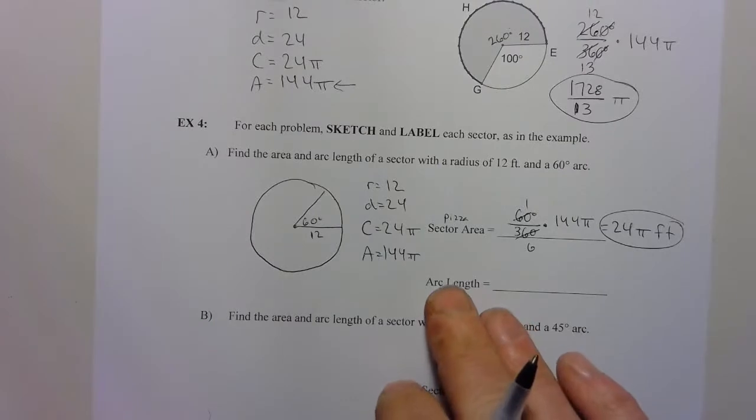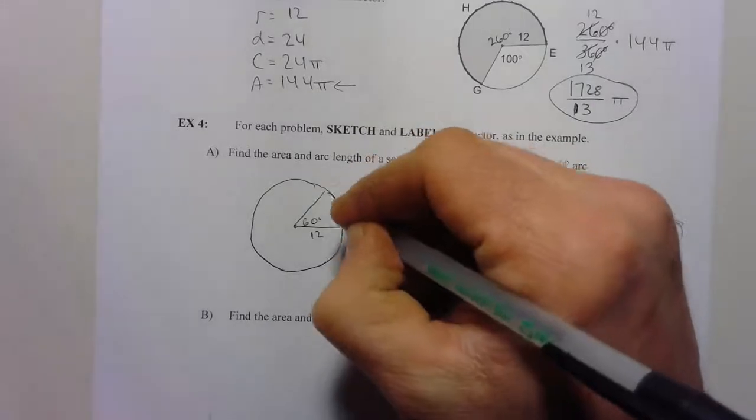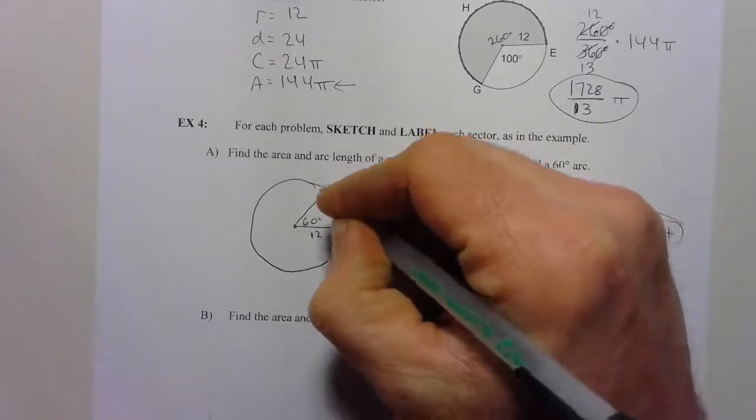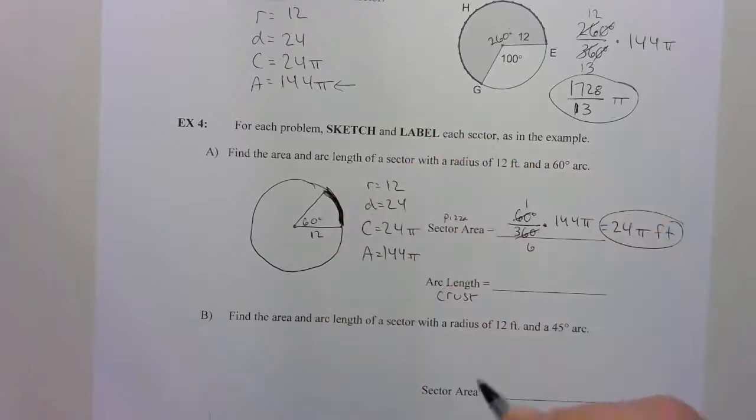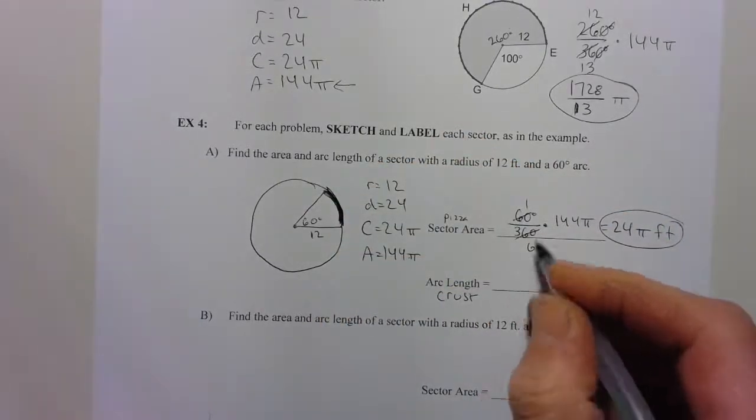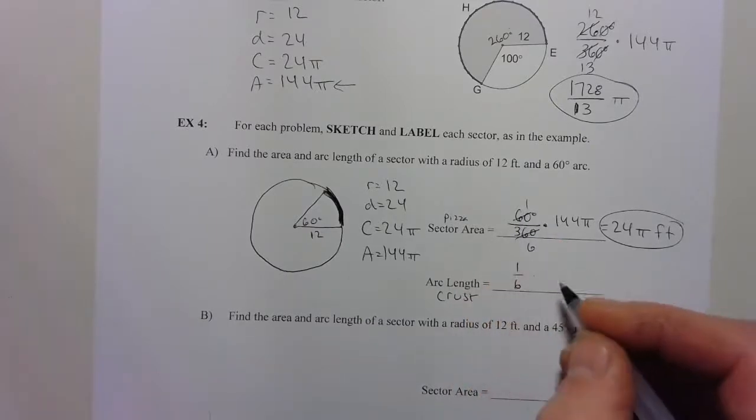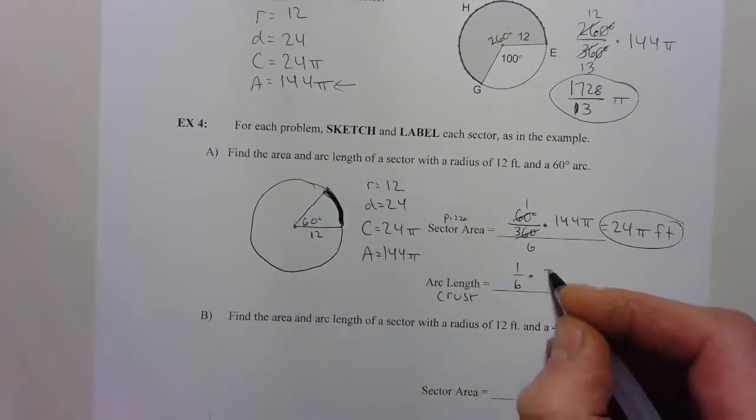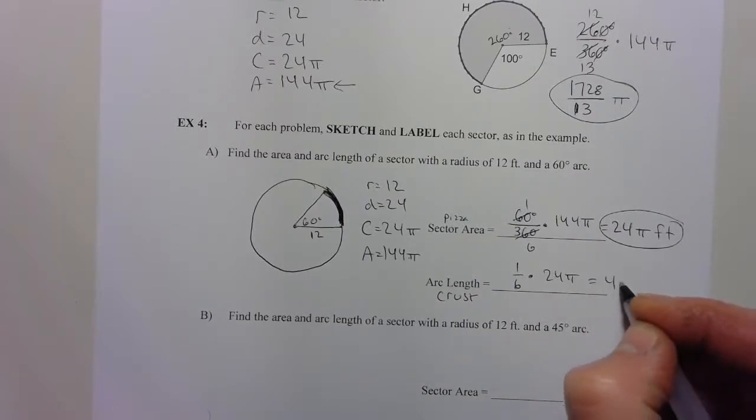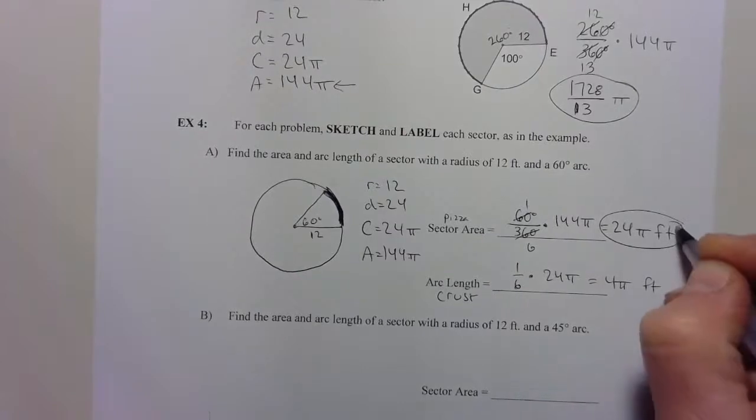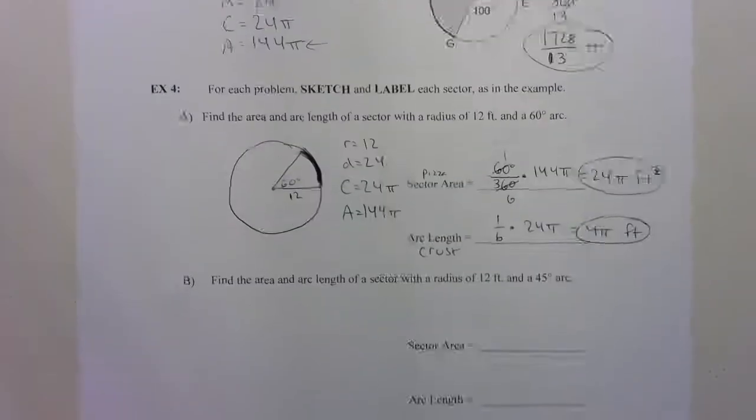When I'm doing arc length, the same problem. Arc length. The arc length is the crust. If you highlight it on there, like here's the arc length. Oh, that's the crust of my pizza. So that means, again, I'm doing 1 sixth of the pizza. I could have written 60 over 360, but I've already reduced that fraction. 1 sixth of 24 pi. 24 divided by 6 is 4 pi feet.